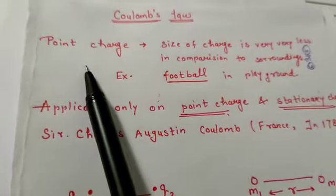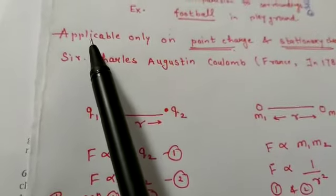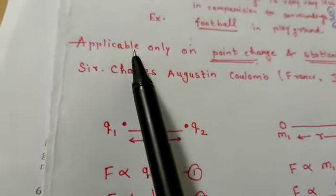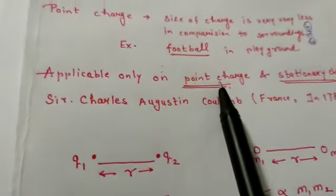Why do we call point charge? Because Coulomb's law's limitation is that Coulomb's law is applicable on point charge.